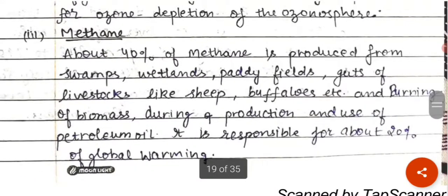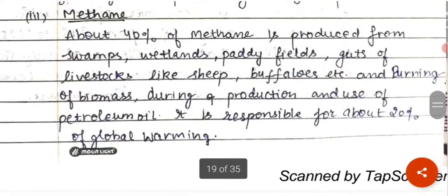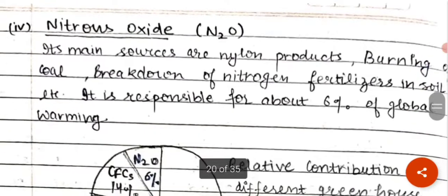Methane: about 40% of methane is produced from wetlands, paddy fields, and the guts of livestock like sheep and buffaloes. Burning of biomass and the production and use of petroleum oil also release methane. Methane is responsible for about 20% of global warming.